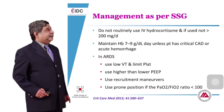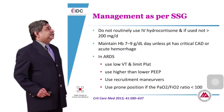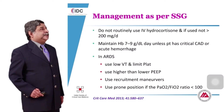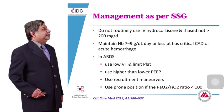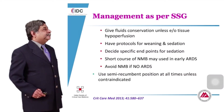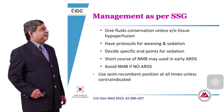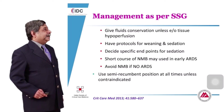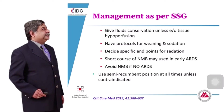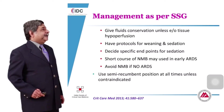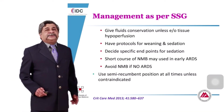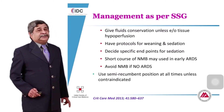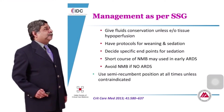For ARDS: use low tidal volume and limit plateau pressure. Use higher PEEP rather than lower. Use recruitment maneuvers. If the PF ratio is less than 100, indicating severe ARDS, you can place the patient in prone position for about 16 to 18 hours a day. Give conservative fluid therapy unless there is evidence of tissue hypoperfusion, as this has been shown to be better for ARDS patients. Always have protocols for weaning and sedation, titrated to specific endpoints using sedation scales such as the Ramsay Sedation Scale.